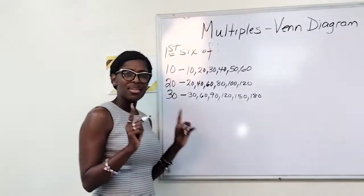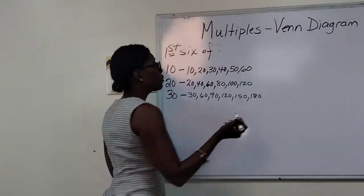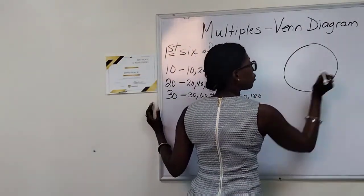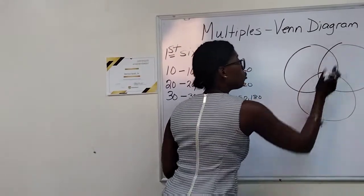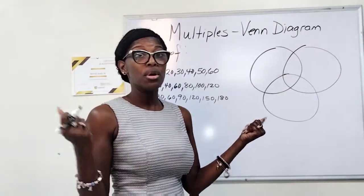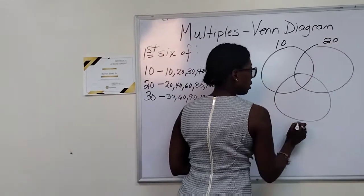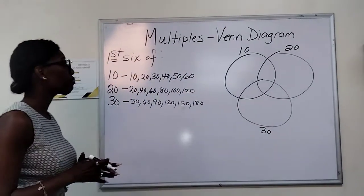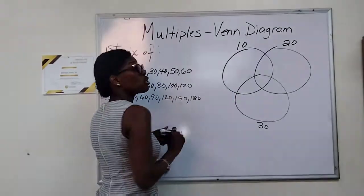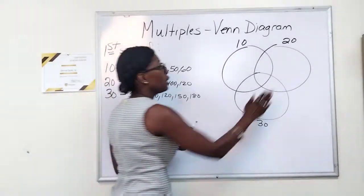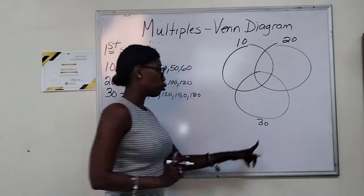The key thing with the Venn diagrams, you want to figure out what they have in common. So we're going to draw three circles. It really doesn't matter which circle you want for which number. For me, I just always go from left to right. So I do 10 here, 20 and 30, just for me. Keep in mind that everything in this circle on this side is for 10s only, multiples of 10s only. Here, multiples of 20 only. Here, multiples of 30 only.